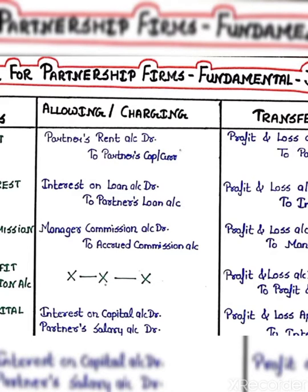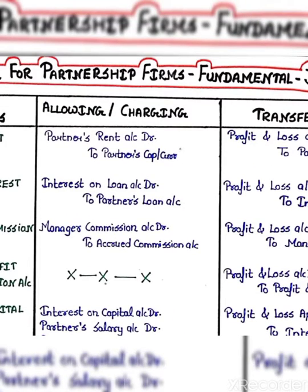If you are talking about who is your rent, you know, transfer to it. So transfer to it, entry will become P&L account debit to partners rent account. Just you can check it from the format, how do you see?